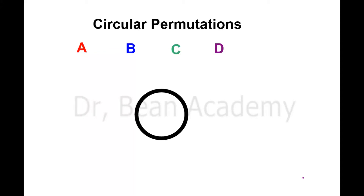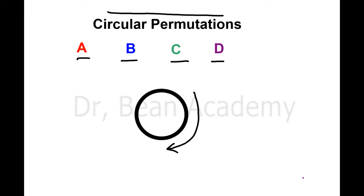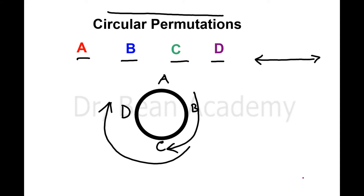Let's talk about circular permutations. Suppose we have four letters A, B, C, D and I want to know how many permutations I can make around this circle. Before, we calculated permutations along a straight line. Now we want to know how many ways I can arrange these letters around this circle — that's why we call it circular permutations.